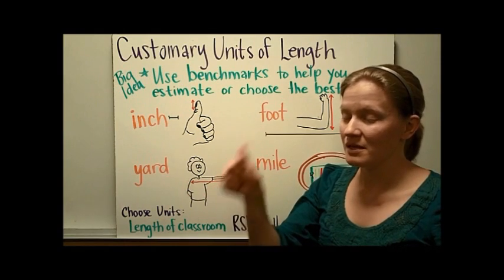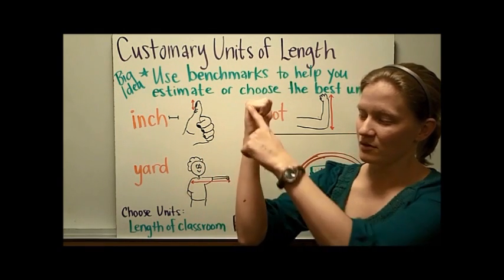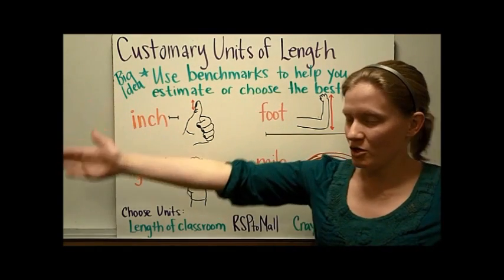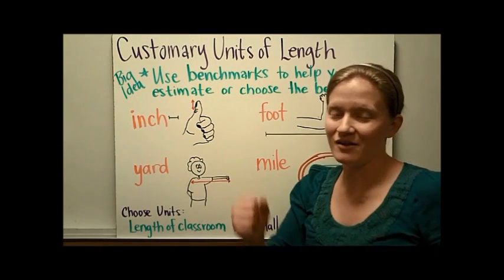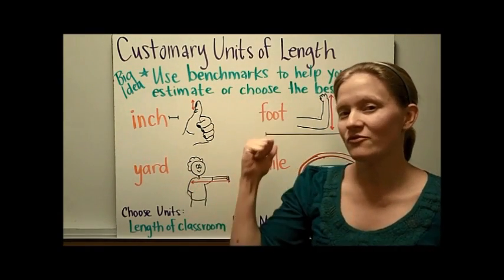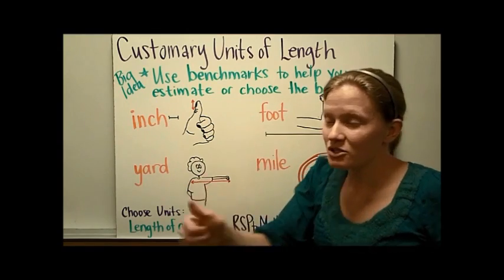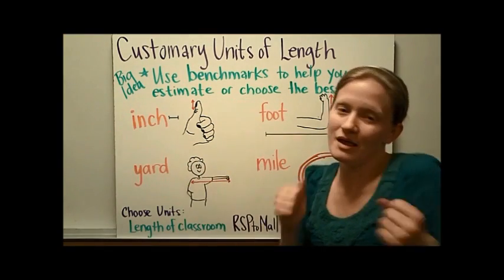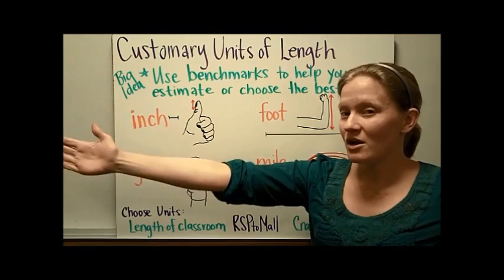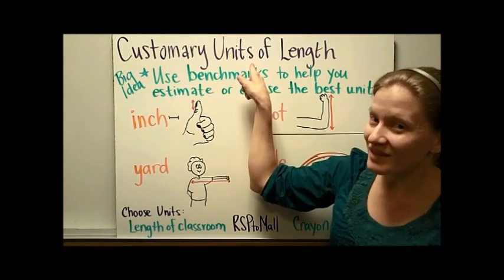So it goes like this: Inch — because you're showing your thumb. Foot — you're going to show this distance on your arm. Yard and mile — because we're running the mile. It goes: inch, foot, yard, and mile. Inch, foot, yard, and mile are the customary units.